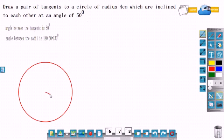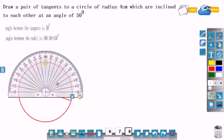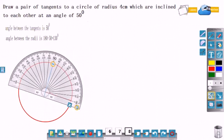Here it is given that tangents are inclined to each other at an angle of 50 degrees, meaning the angle between the tangents is 50. So the angle between the radii is 180 minus 50, that is 130 degrees, because the sum of the angle between the tangents and the angle between the radii is 180 degrees.